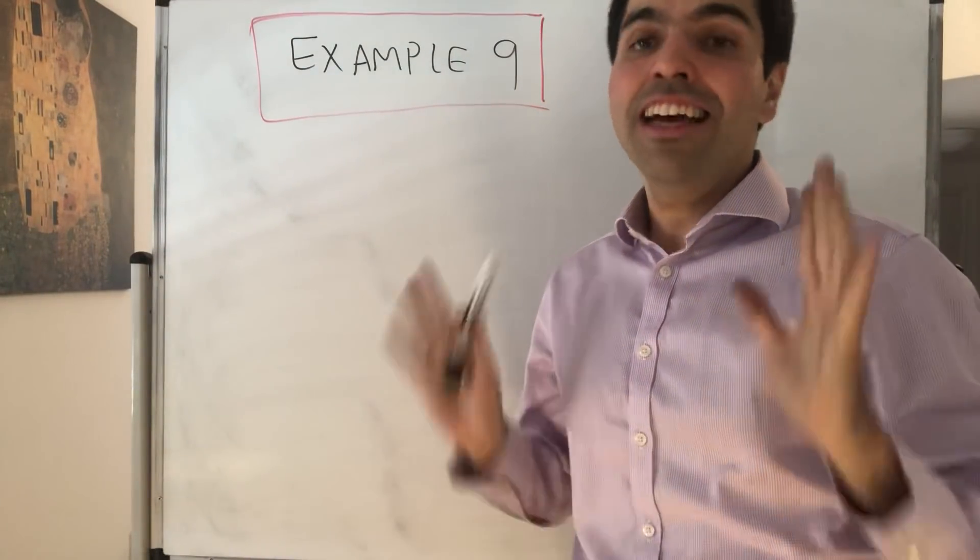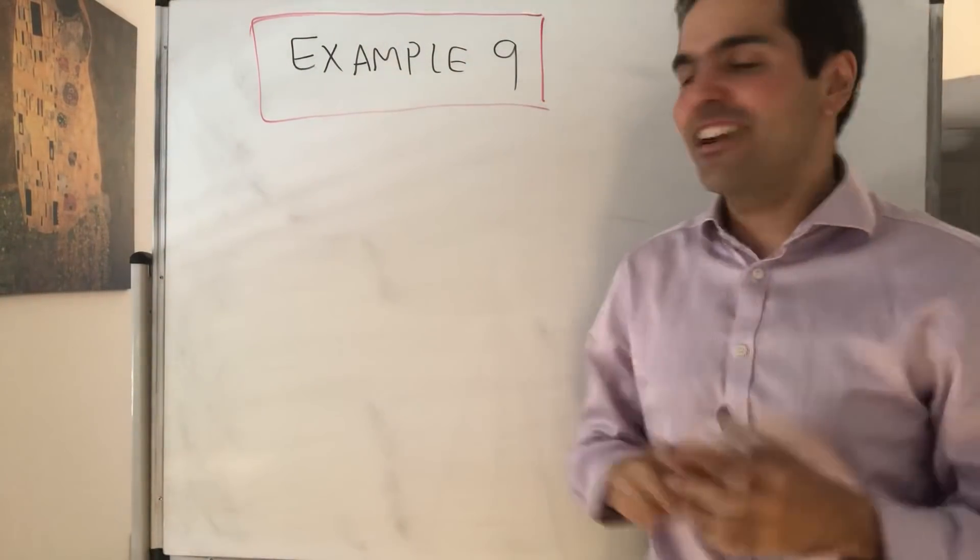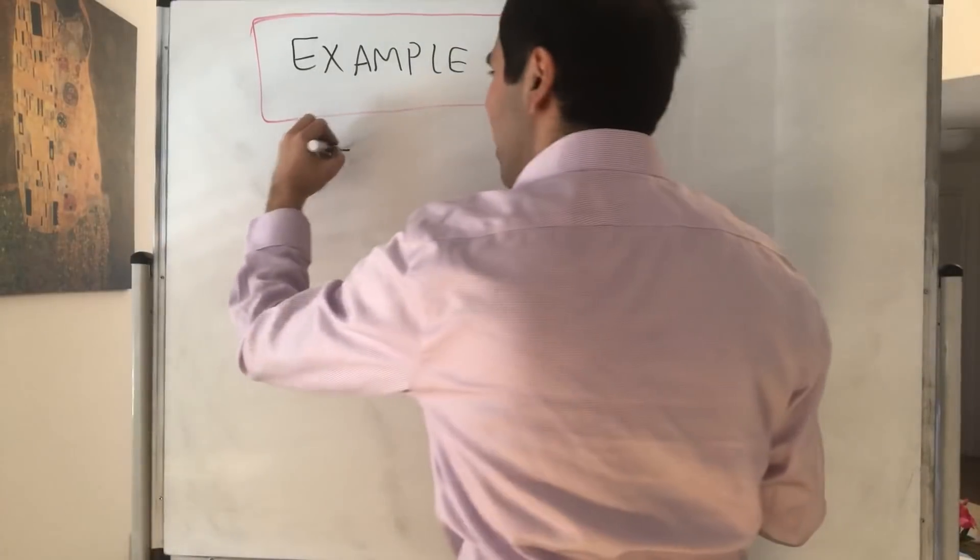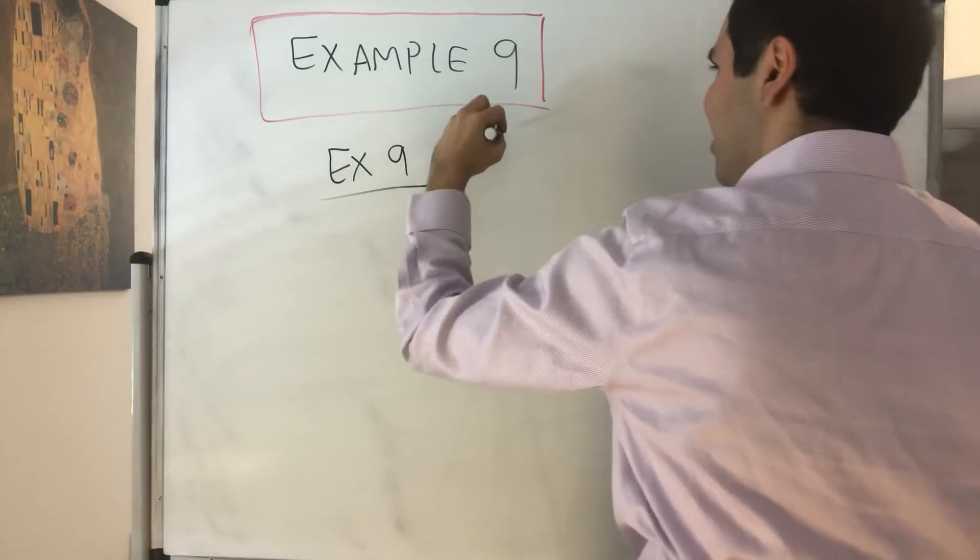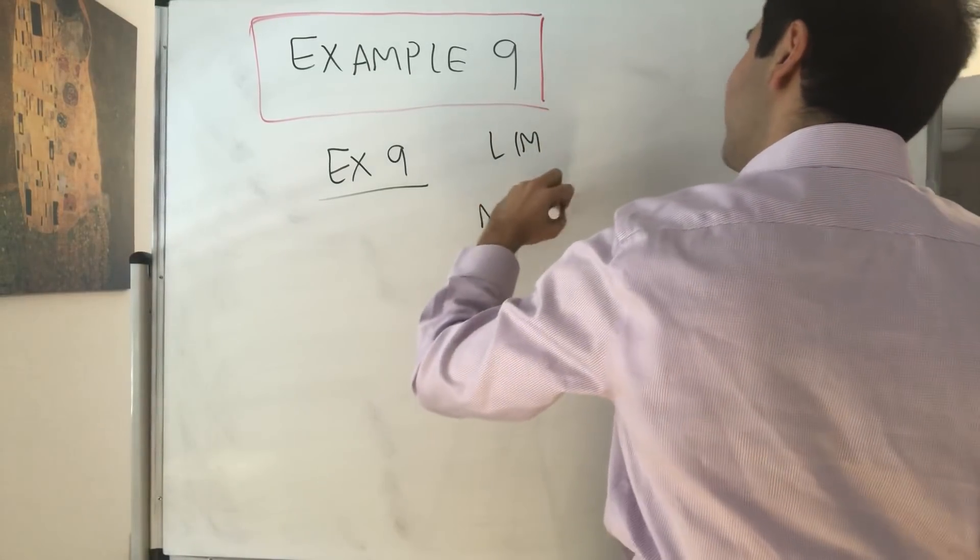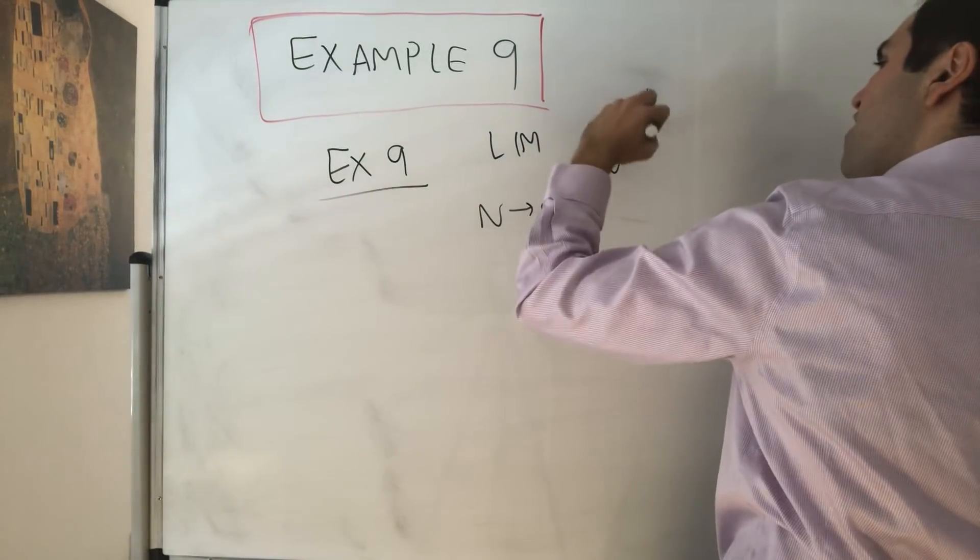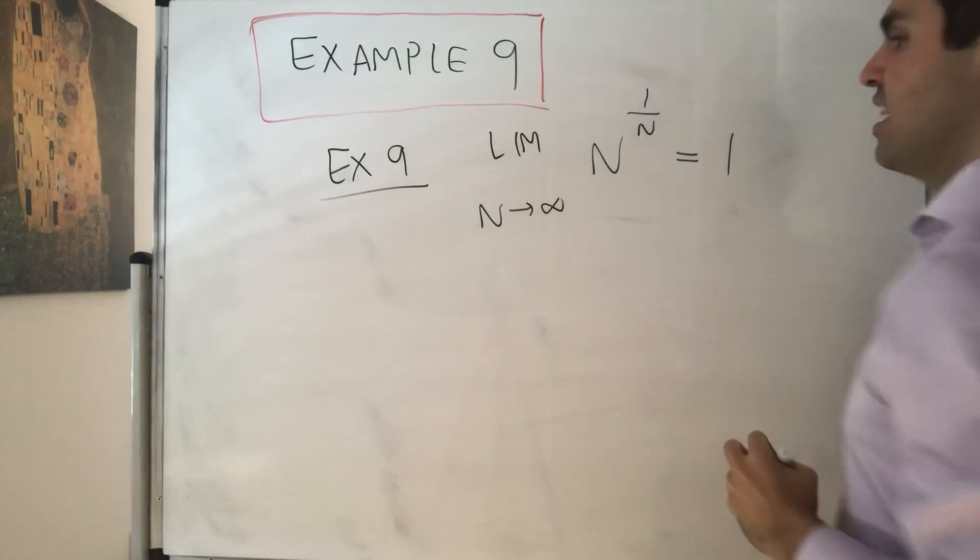All right, thanks for watching. Today we'll do another very classical limit and what's amazing about this is that we'll do it without using any calculus. So let's show that the limit as n goes to infinity of n to the 1 over n equals 1.